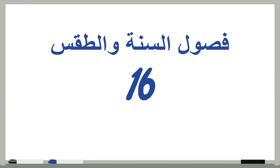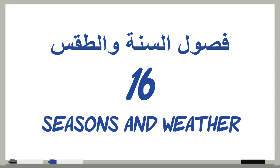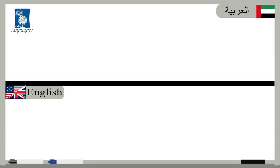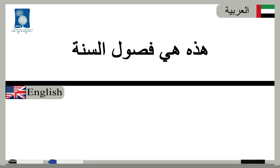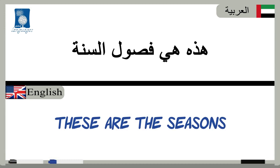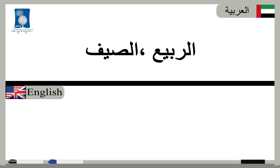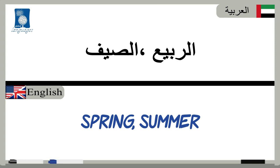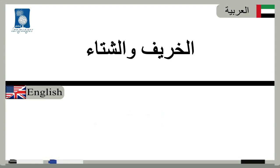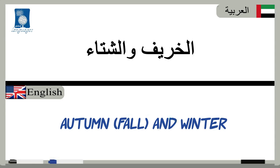فصول السنة والطقس — Seasons and weather. These are the seasons: الربيع، الصيف، الخريف والشتاء — Spring, summer, autumn and winter.